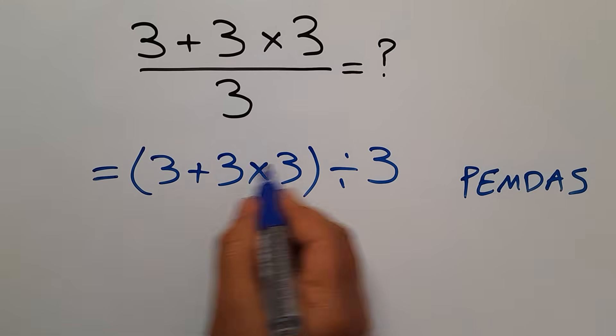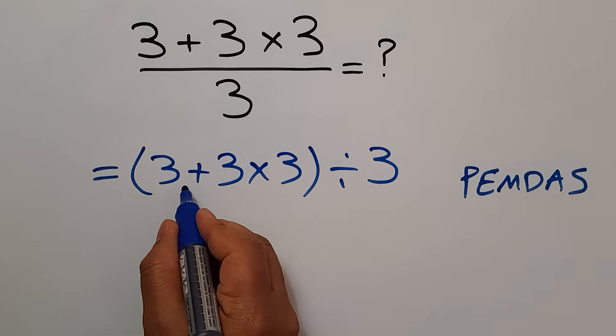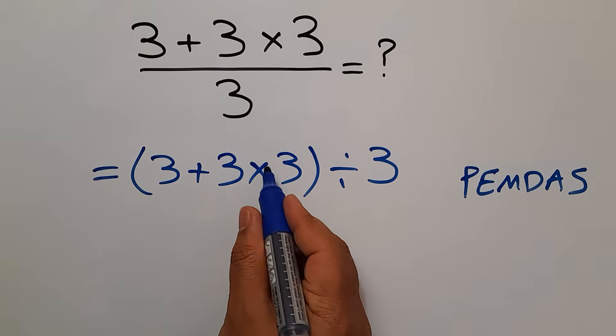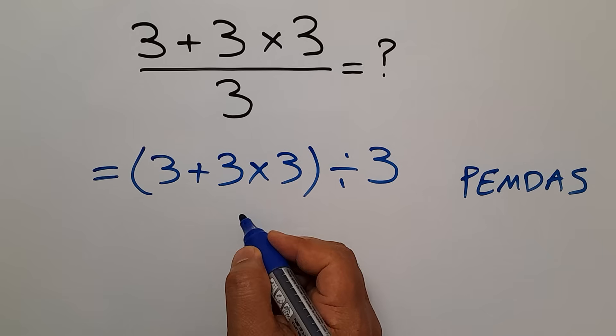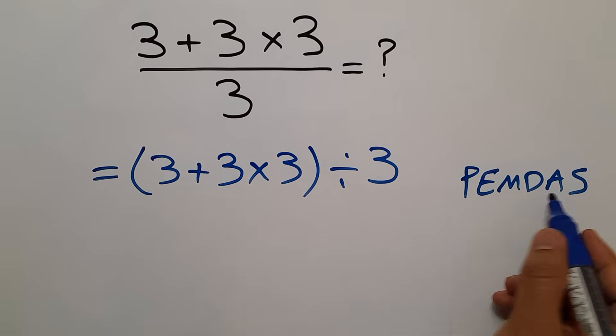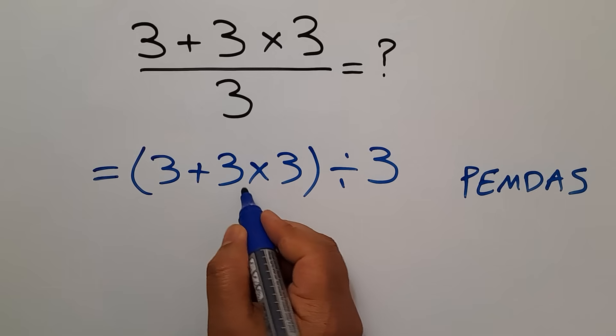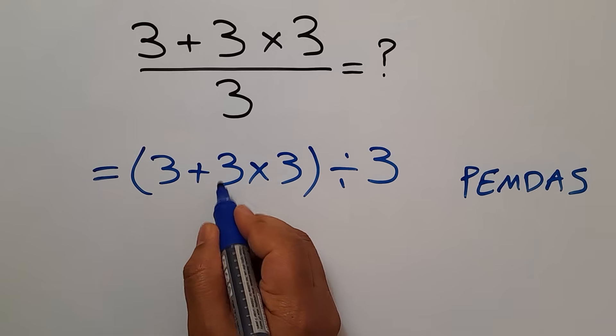So here we have these parentheses and inside these parentheses, we have this addition and this multiplication. According to PEMDAS, we first do this multiplication. And 3 times 3 gives us 9.